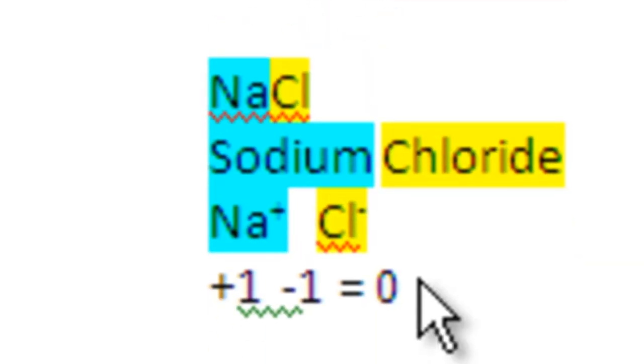Next, sodium chloride, very similar. Why is that? Well, we have sodium as before, but chloride is also a halogen, group 7a, so it's negative one. Positive one, negative one, equals zero.